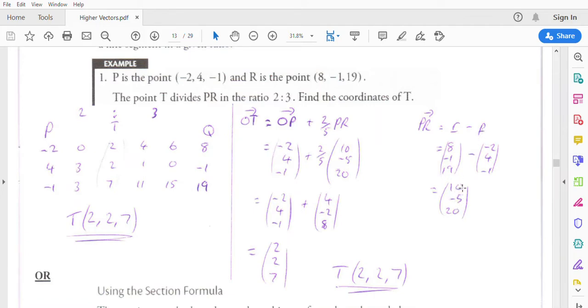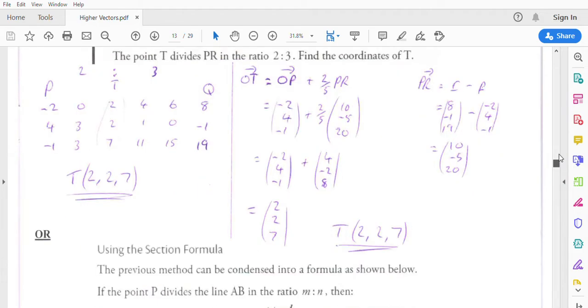Calculate PR first of all. We end up with 10, negative 5, 20. So O to T will be OP plus 2 fifths of PR. So it'll be negative 2, 4, negative 1 plus 4, negative 2, 8. Which comes out again as 2, 2, 7. Just different methods for calculating the same thing. Remember to write it as a coordinate, not as a vector. We're looking for the coordinate of T.